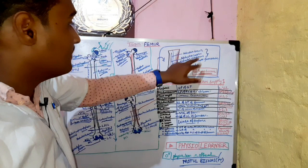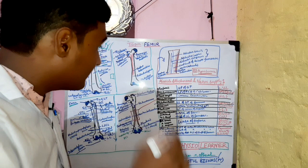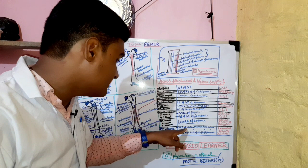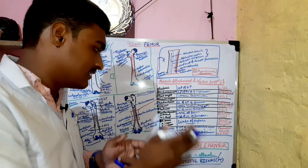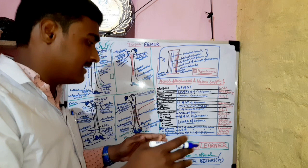Adductor brevis, adductor longus, and adductor medius attach to the linea aspera. The short head of biceps femoris also attaches here. Vastus lateralis originates from the upper part of the intertrochanteric line. Vastus medialis originates from the lateral part of the intertrochanteric line. Vastus intermedius originates from the upper two-thirds of the lateral surface of the femur.